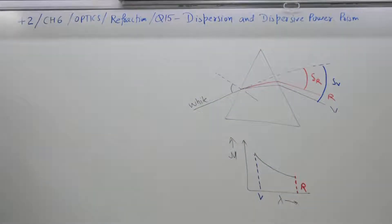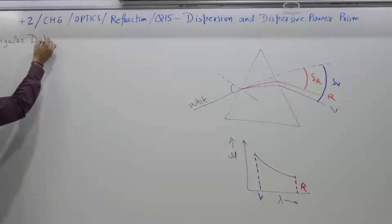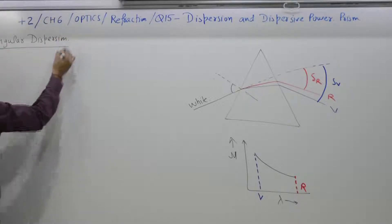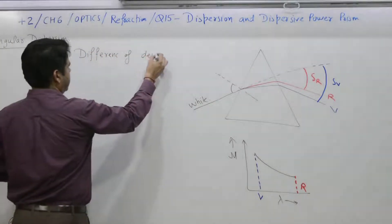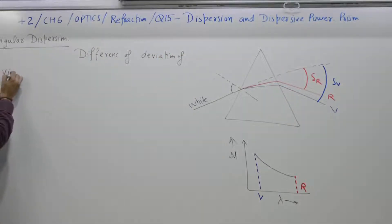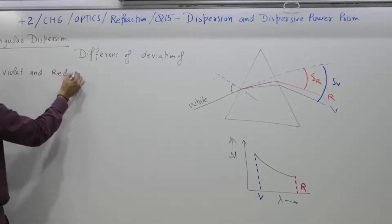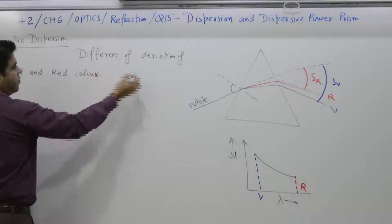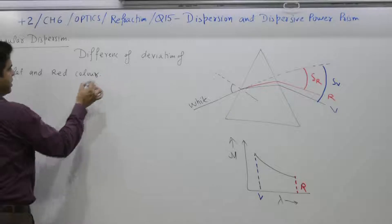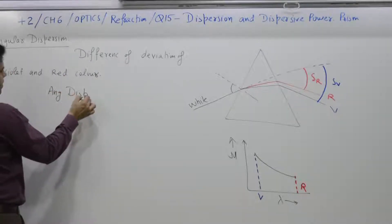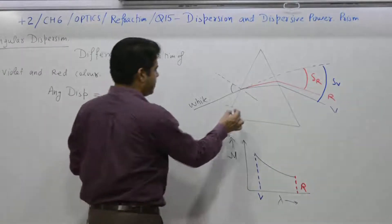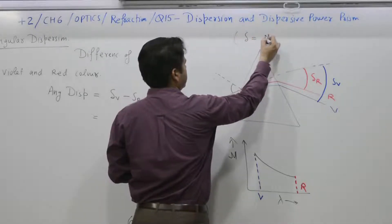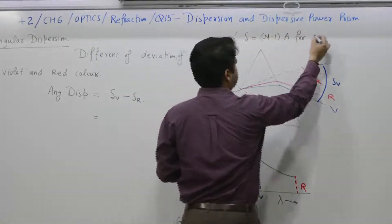First part: dispersion or angular dispersion. Angular dispersion is the difference in deviation of violet and red color — in this particular case, white light. So angular dispersion is equal to delta_v minus delta_r. For small angles, deviation produced is equal to (nu minus 1) times A.